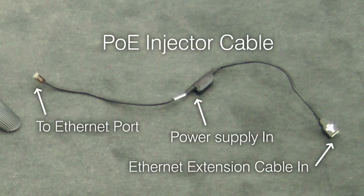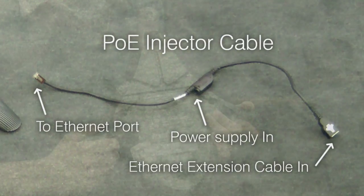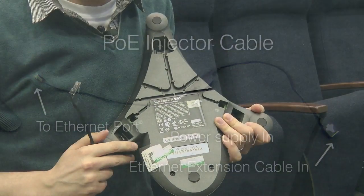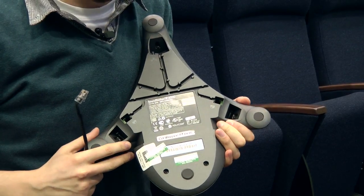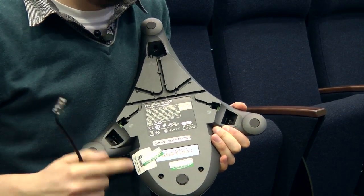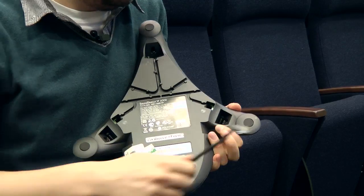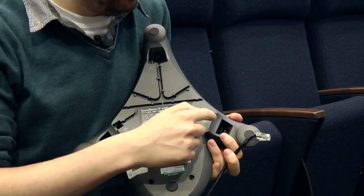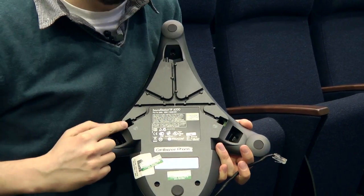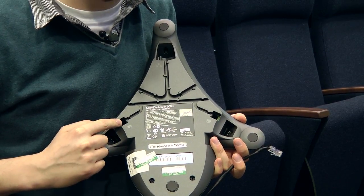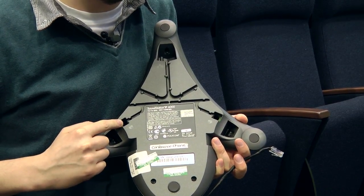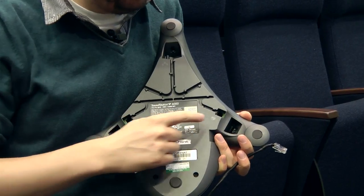The other end of the POE injector cable connects into an Ethernet port. Now I'm going to show you how to plug everything up on this conference phone. Starting with the back of the phone — you have two sockets here. These come into play with conference phone two; these sockets are for the microphone extensions, so you just plug them in here and here.